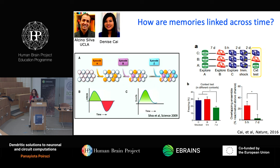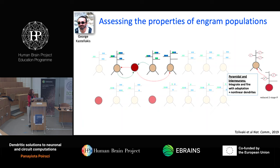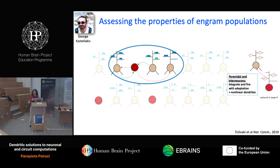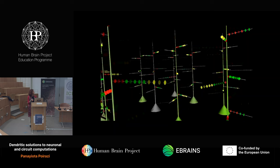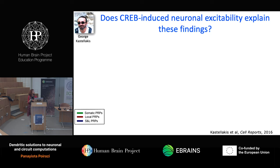If you separated the memories by seven days, this linking behavior was not observed. She also found this was correlated with a much higher overlap in the population of neurons encoding the two memories when they were close in time versus separated across several days. We teamed up with Alcino to use a computational model to figure out the mechanism behind this linking. We generated a microcircuit model of 500 neurons, furnished with nonlinear dendrites in the pyramidal neurons and interneurons, and trained it to form an associative memory using four types of plasticity rules: classical LTP and LTD, homeostatic plasticity, plasticity of intrinsic excitability, and rewiring.